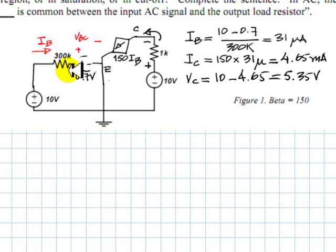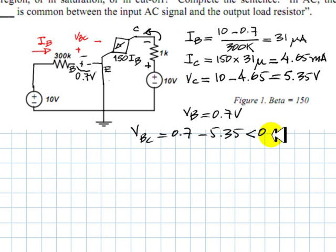What about the voltage of the base? The base is 0.7 volts above the reference, which means that the voltage between the base and the collector would be 0.7 minus 5.35 volts, which is evidently a very negative number,